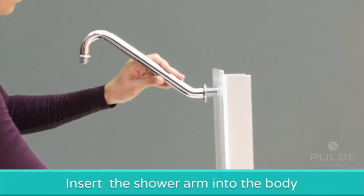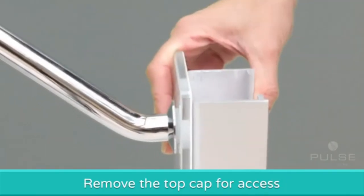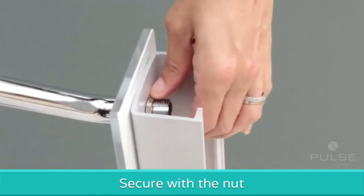Next, insert the shower arm into the body of the Aloha shower spa. Remove the top cap for access and secure with the nut.